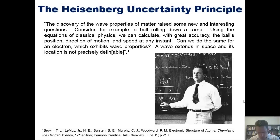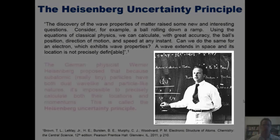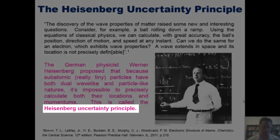As we consider this question, whether or not we can actually define an electron's position and velocity in space, it brings us to this man right here, a German physicist whose name was Werner Heisenberg. He proposed that because subatomic or really, really tiny particles have both wave-like and particle-like natures, it's impossible to precisely calculate both their locations and their momentums or velocities. This is called the Heisenberg Uncertainty Principle.